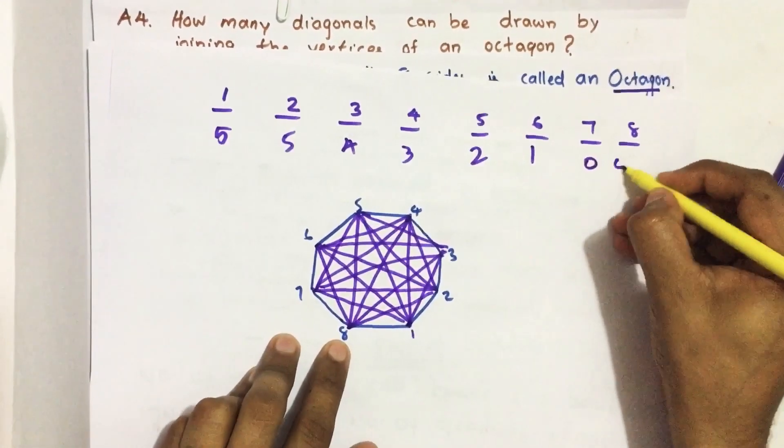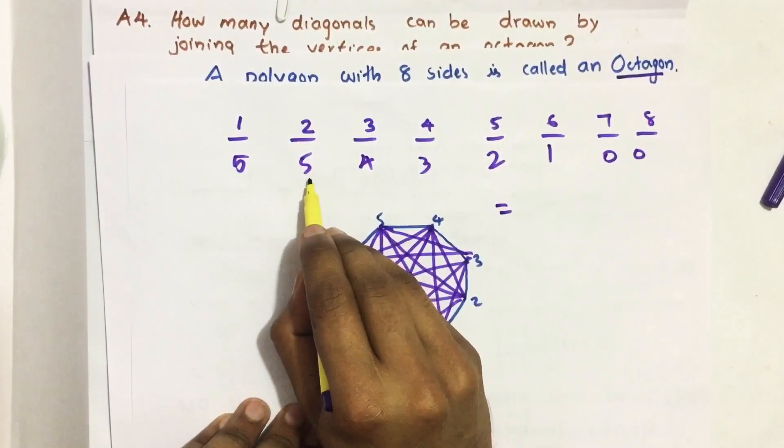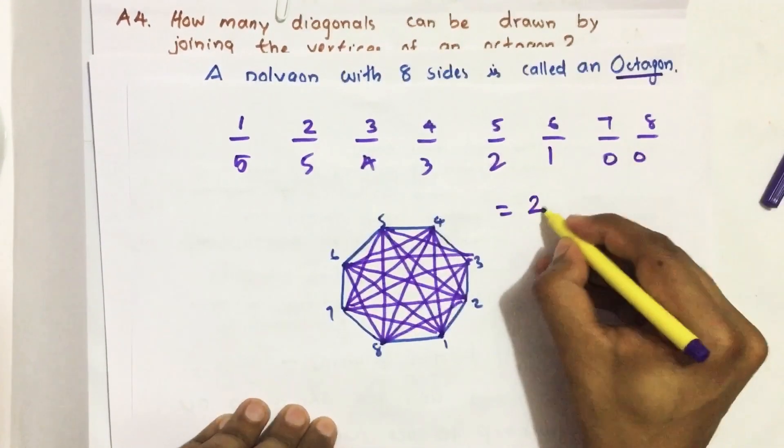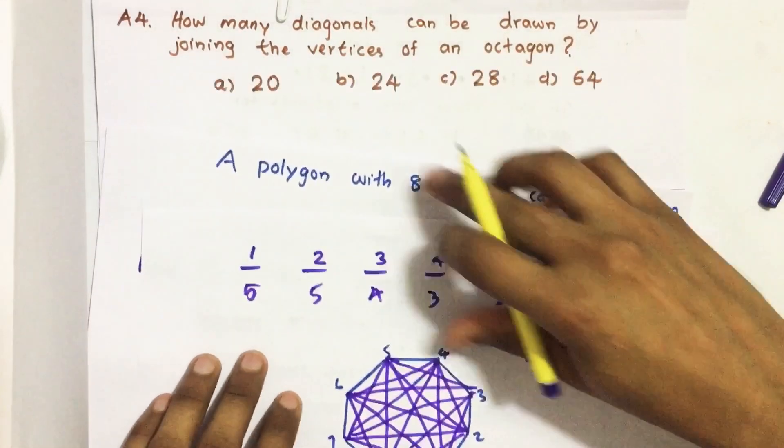So here it is 0. So total diagonals equal to 5 plus 5, 10, 14, 17, 19, plus 1, 20. Like this also we can solve. So our answer is option A, 20.